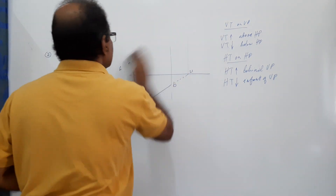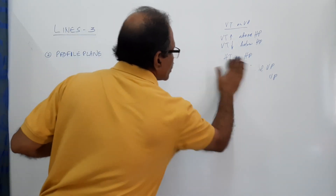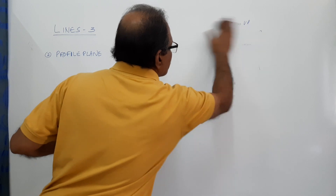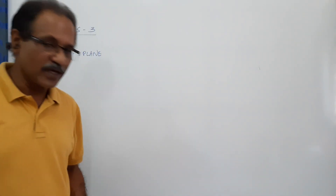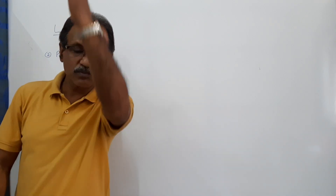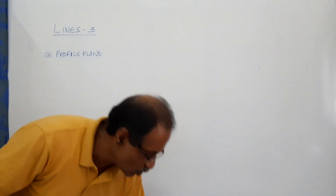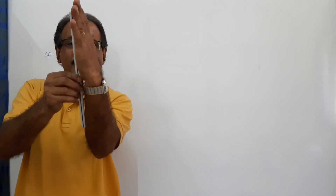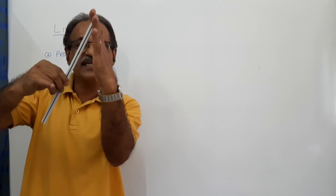Now we move on to the profile plane. A profile plane is a plane which is perpendicular to both HP and VP. If you divide a room into two rooms by constructing a thin wall, that is called the profile plane — it will be perpendicular to HP and perpendicular to VP. I am holding this line in the profile plane; the line should stick to the profile plane and not detach.